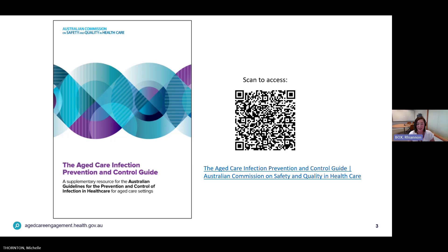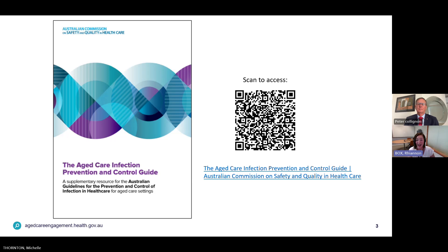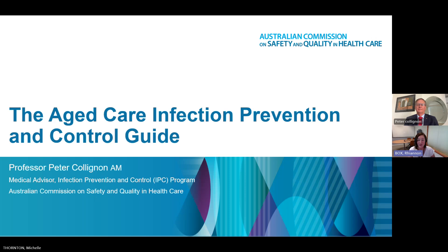The new IPC guide provides guidance on infection control for diverse client types and aged care delivery settings. Our first speaker, Professor Peter Collignon, is the medical advisor to the Australian Commission on Safety and Quality in Healthcare and the co-chair for the IPC Guidance and Aged Care Reference Group, which led development of this guide. Professor Collignon will talk about the key components of the new IPC guide and provide practical information on how the sector can use this new resource.